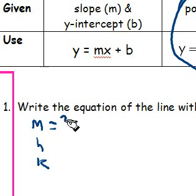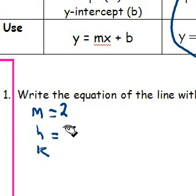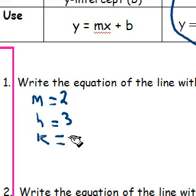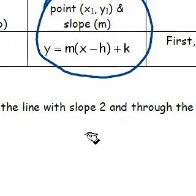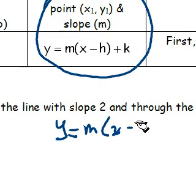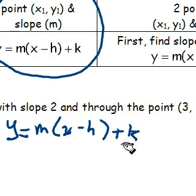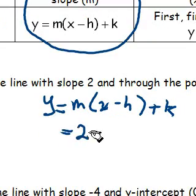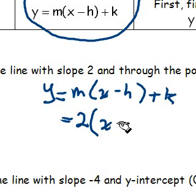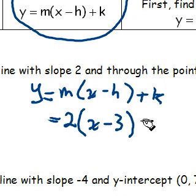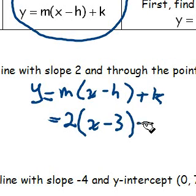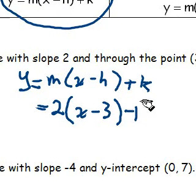So, our m was given to us, it's two, our h was given to us, it's three, and our k was given to us, it's negative one. So, y equals m, which is two, times the quantity x minus three, plus k, which is like a minus one.